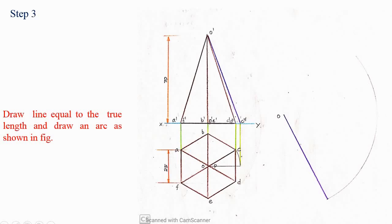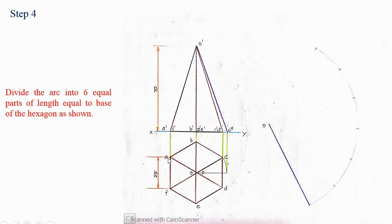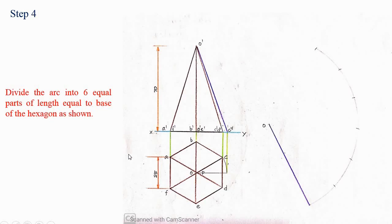In the next step, you know that the base side is 25 mm. So you measure 25 in the compass, place it on the arc, and cut it — marking off six equal divisions of 25 mm along the arc, since there are six sides. So divide the arc into six equal parts of length equal to the base of the hexagon, which is 25 mm.